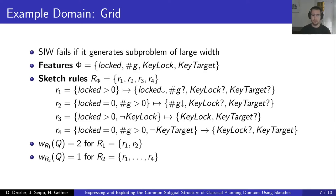We can do even better by also considering rules R3 and R4, which further decompose the problem into more fine-grained sub-problems. Rule R3 says: if there are locked places and we are not holding a key that allows us to unlock one, then pick up a key that allows unlocking a place. Rule R4 further decomposes the sub-problem of R2: if there are no locked places but there are misplaced keys, then pick up a misplaced key to move it to a target location. We can prove that the width of this sketch is 1, making it very efficient for solving the whole class of problems.